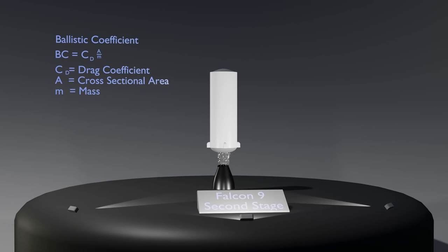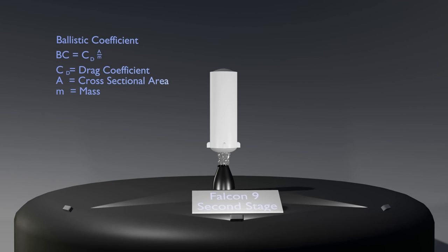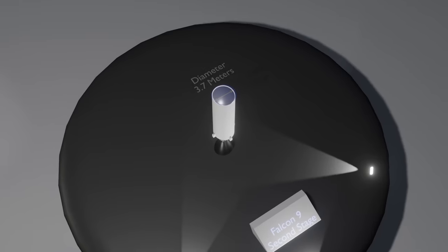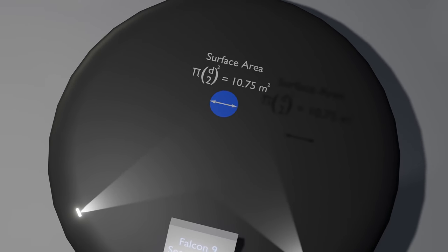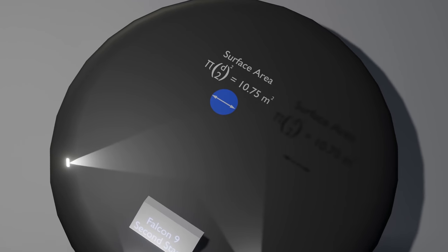Secondly, the cross-sectional area is the surface area of the face that is colliding with the air particles. With the Falcon 9 second stage having a diameter of 3.7 meters, this gives a surface area of 10.75 square meters.